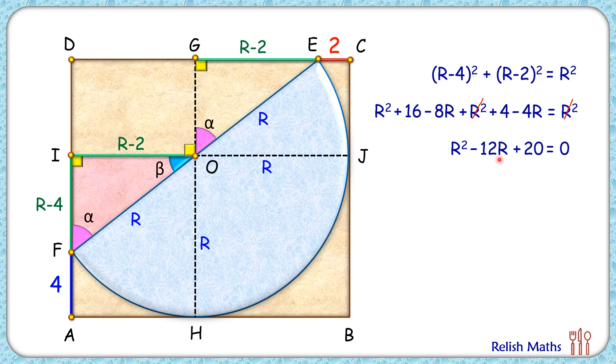Solving by splitting the middle term, we get (r-10)(r-2) = 0. So r is either 10 cm or 2 cm. But we know that r is definitely more than 4 cm if we look at AI. So neglecting the second answer, we can say that r is 10 cm and that's our answer.